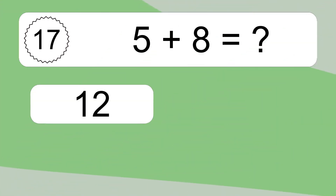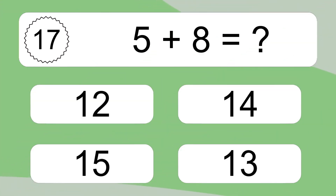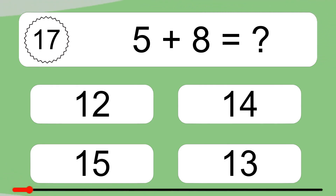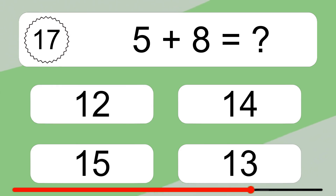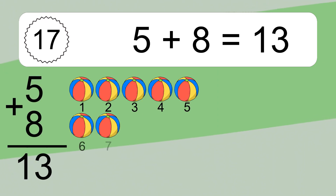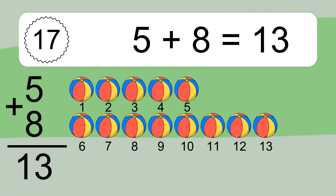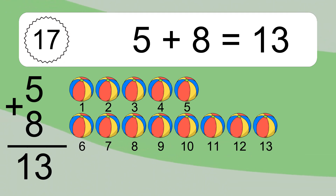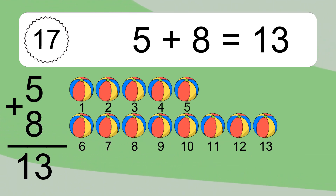5 plus 8 equals what? 5 plus 8 equals 13. Let's count it. 1, 2, 3, 4, 5, 6, 7, 8, 9, 10, 11, 12, 13.